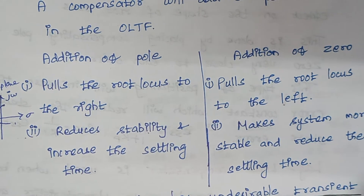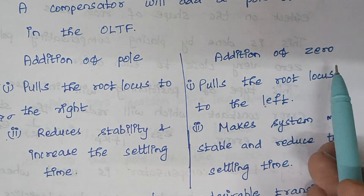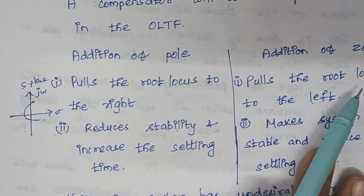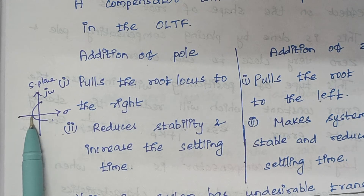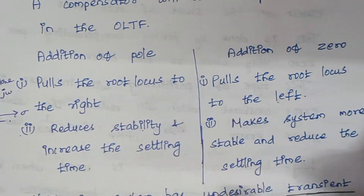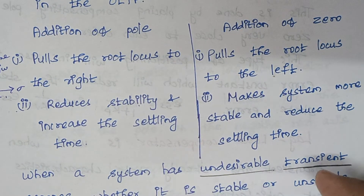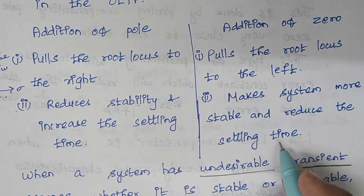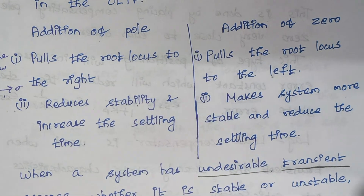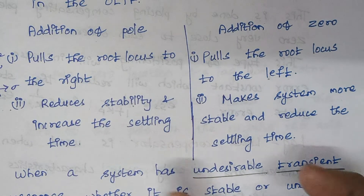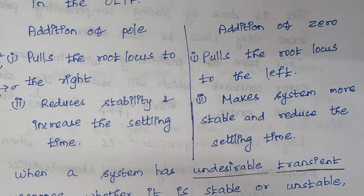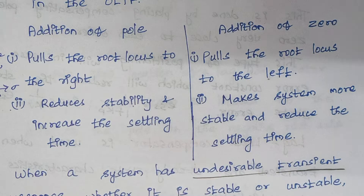If we add a zero, the root locus is pulled to the left, which makes the system more stable and drastically reduces the settling time. So which is more beneficial — adding a pole or a zero? Based on this difference, adding a zero is generally better, but it depends on the open-loop transfer function of the system.